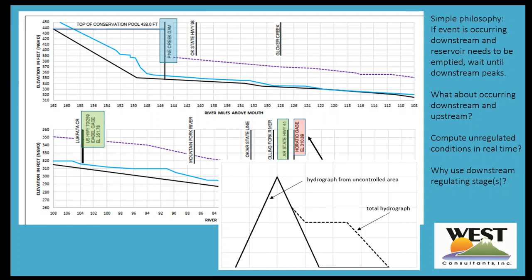If I have water stored in the reservoir and I'm getting an event occurring downstream, I can make sure that my peak at the downstream point of interest is not going to be greater than what would have occurred had the dam not been in place by making my releases after the downstream uncontrolled peak has reached its peak and is on its recession limb. The solid line shows the hydrograph from the uncontrolled area, and the difference between the total hydrograph and that line is just the releases from the dam.